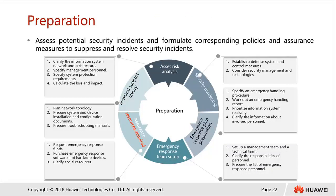Let's look at all the cybersecurity emergency response phases. First is preparation — a step where we assess potential security incidents and come up with corresponding policies and assurance measures to suppress and resolve security incidents. For preparation, we first need to know about our assets. Asset risk analysis is required to identify the information systems, network architectures, measurement personnel, system protections required, and to calculate potential losses.